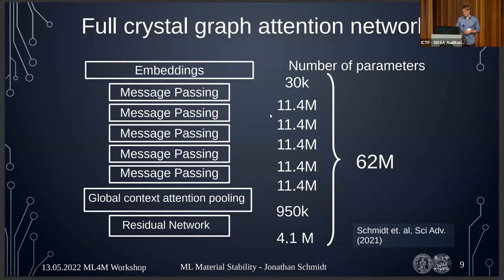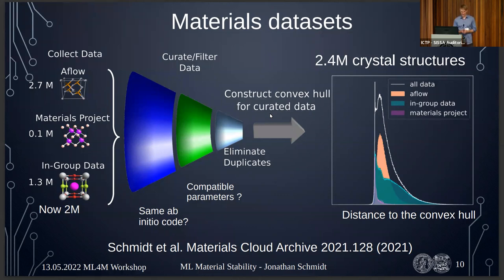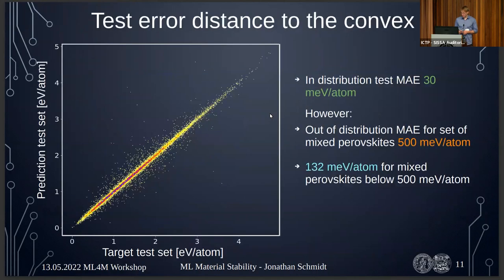With that many parameters, we needed more data, so we curated a new dataset. We had about two million calculations from our own group, combined with data from AFLOW and the Materials Project, ending up with 2.4 million crystal structures with a rather complete convex hull — also important for determining stability. This dataset is available online, so please use it if it's useful.